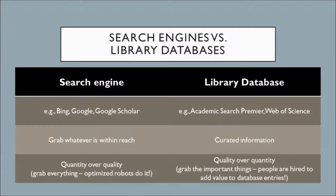A library database, like Academic Search Premier or Web of Science, is more focused on providing you with curated information. You have a much greater depth of information about a resource, and quality is valued over quantity. Databases are also able to hire people to provide this quality information.